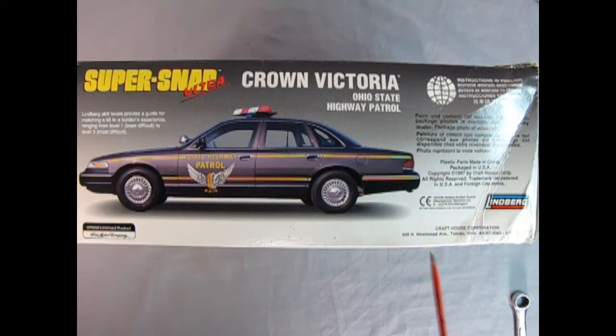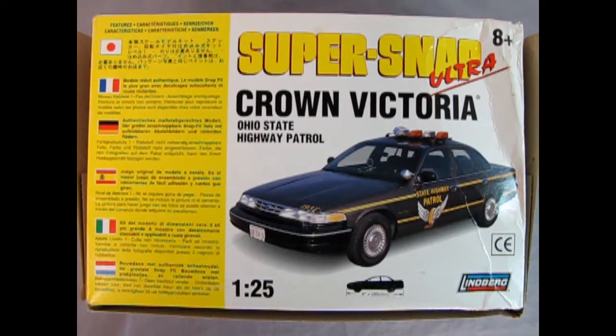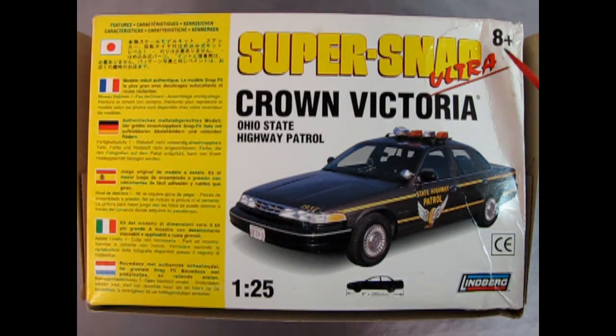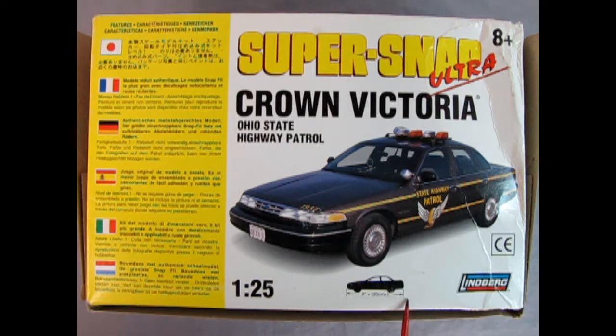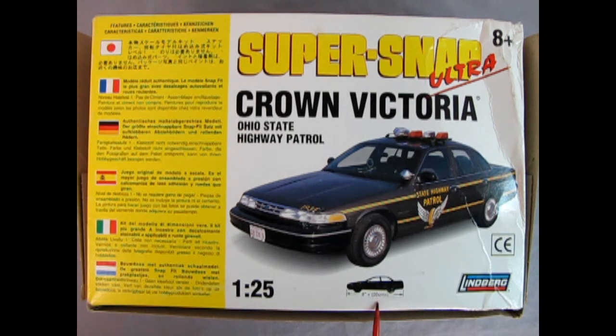It says paint and cement is not included and all the rest of that great stuff. Looks like it did get bashed in the corner here. We also have a copyright 1997 by Craft House Corporations right there. All rights reserved. On the bottom of the box we have some more details about our Crown Victoria. It is intended for ages 8 and up. The model kit is 8 inches in length which is 20 centimeters.